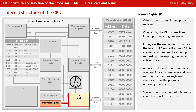Finally, we have the interrupt register, often known as an interrupt control register. This is checked by the CPU to see if an interrupt is awaiting processing. If it is, a software process known as the interrupt service routine kicks in and handles the interrupt request by interrupting what is currently going on. Interrupts can come from many different sources — a very simple example would be the routine which handles keyboard events, such as you pressing the space bar. You're going to learn a lot more about interrupts and how they work in another part of the course.